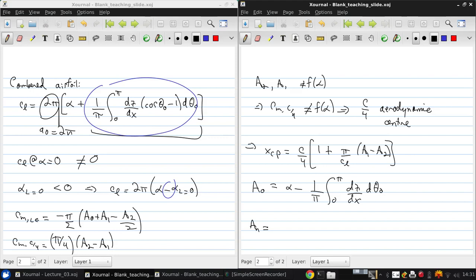And for A1 and A2, we can write AN as 2 over π, and we'll go from 0 to π, dz/dx cos(N θ₀) dθ₀. Where this dz/dx is the slope of the camber line and can be expressed in terms of this theta.